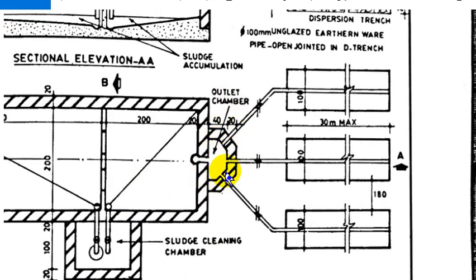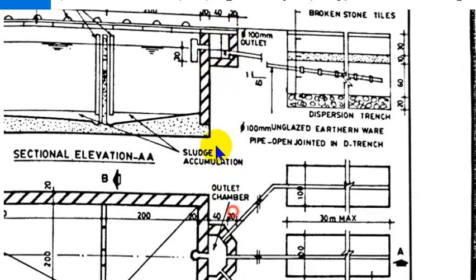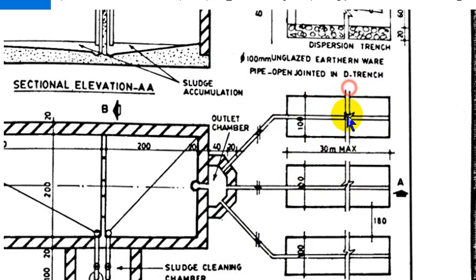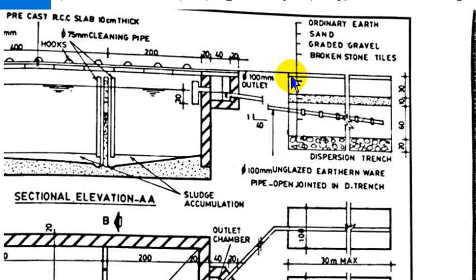Now we have the height. We are using the dispersion trench method. This is the dispersion trench cross-section.